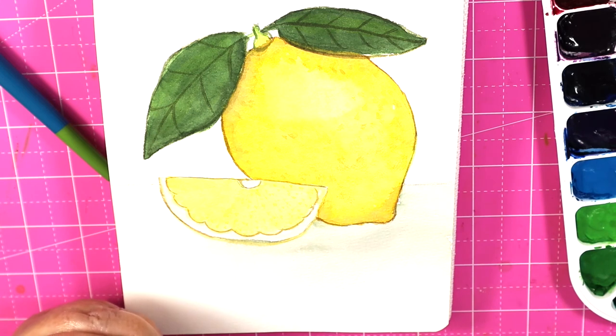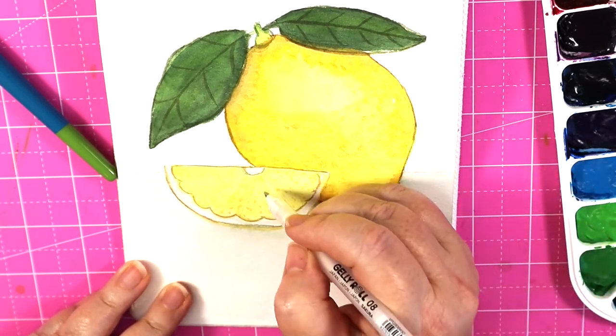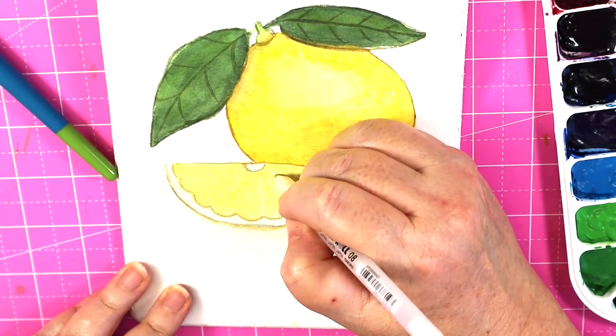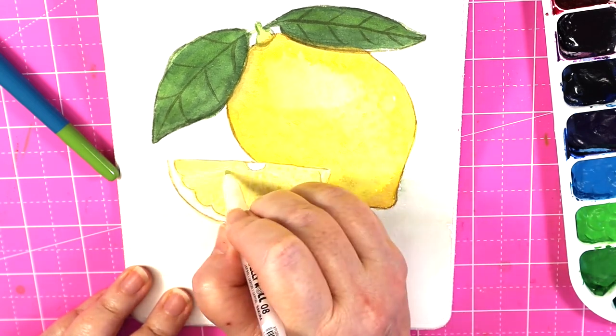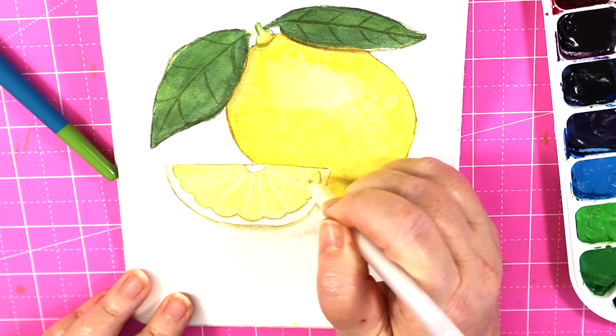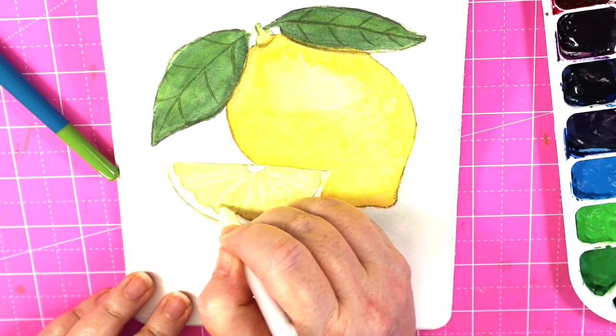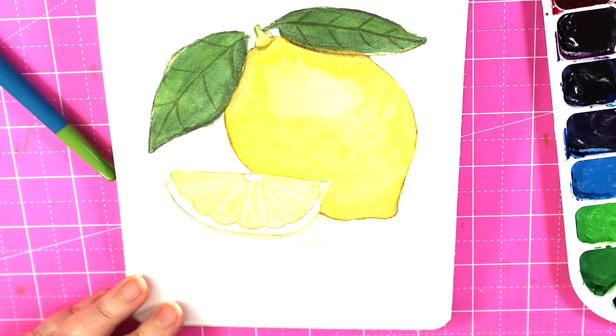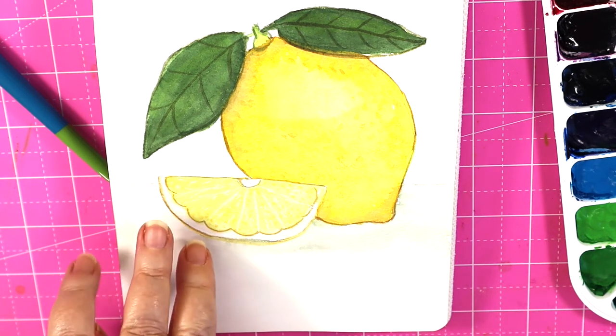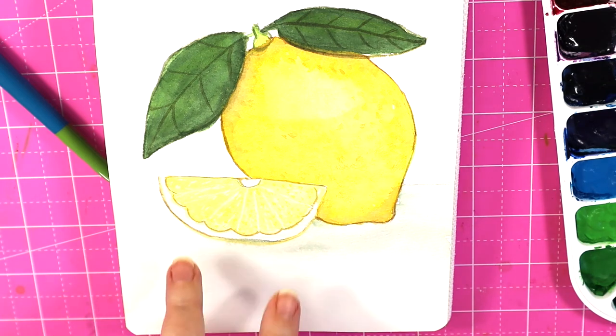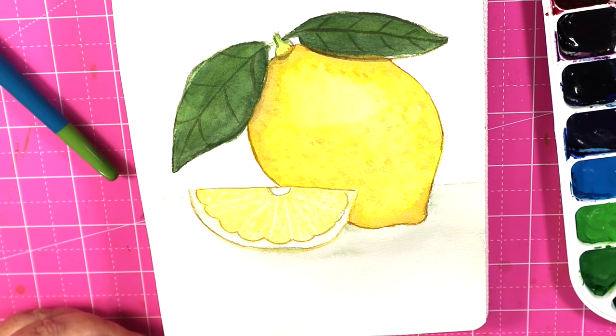Let's take some white jelly roll, white jelly roll pen, and let's make some highlights. Or you can use your white Signo or white watercolor. I think I could have gone a little deeper with that yellow or that lemon, but I wanted it to be noticeably different than that. So there you have it, how to paint a lemon.